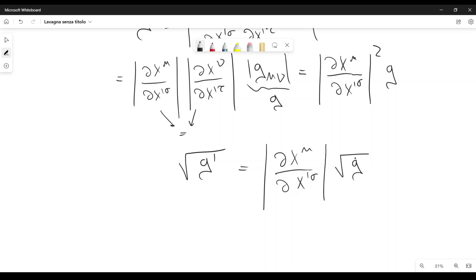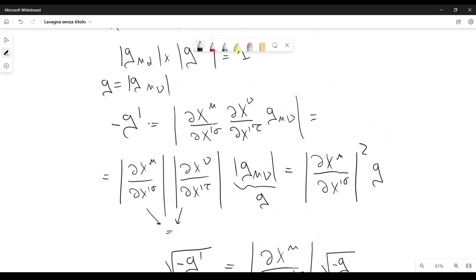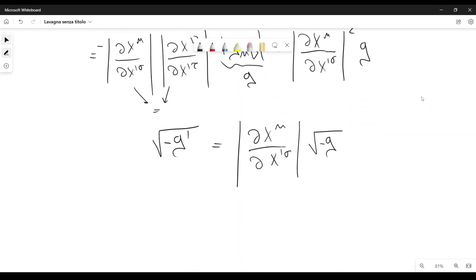Now Einstein notices that the determinant of the metric tensor is negative. Therefore, here it should be more appropriate if we put a minus sign inside the square roots. This can be done because, for example, you can change the sign in this equation here, and then you take the square root on both sides.